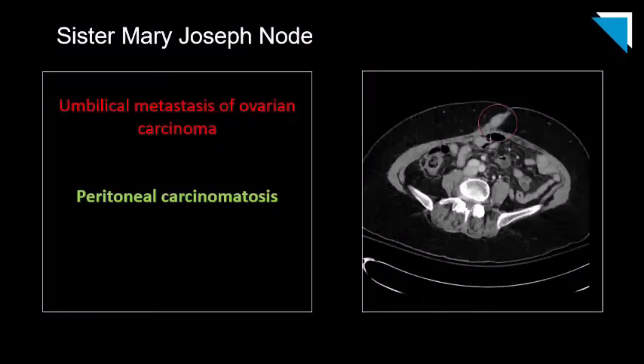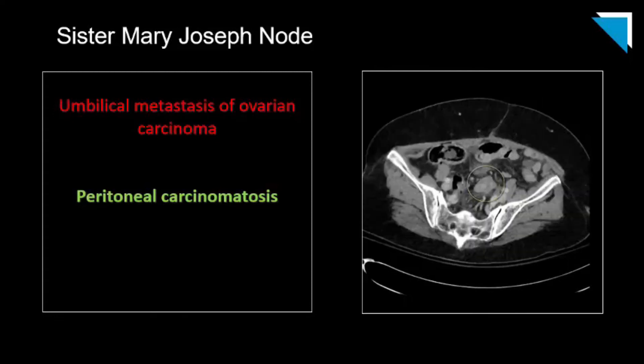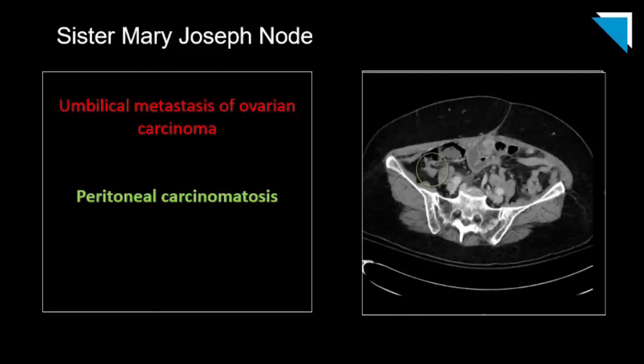Here is a patient with an enhancing umbilical mass, shown outlined in a red circle. When reading this case, this was the first thing that jumped out suggesting a history of malignancy — no history of malignancy was initially provided, making this an important discovery. Once this finding was made, all these other peritoneal implants started to jump out, like these in the left lower quadrant and here in the right lower quadrant.